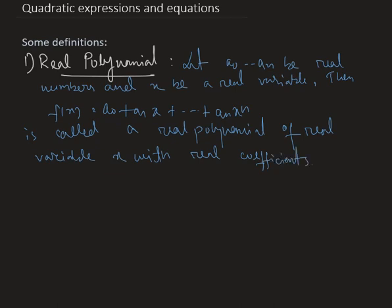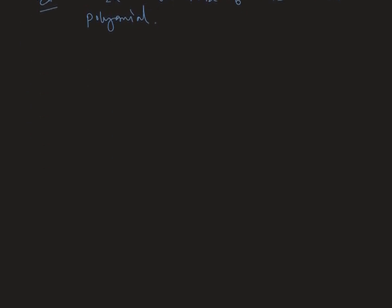For example, 2x³ − 6x² + 11x − 6 is a real polynomial. Now come to the next one.